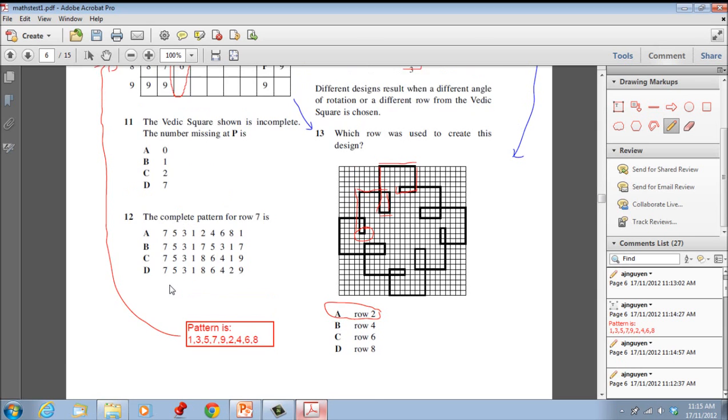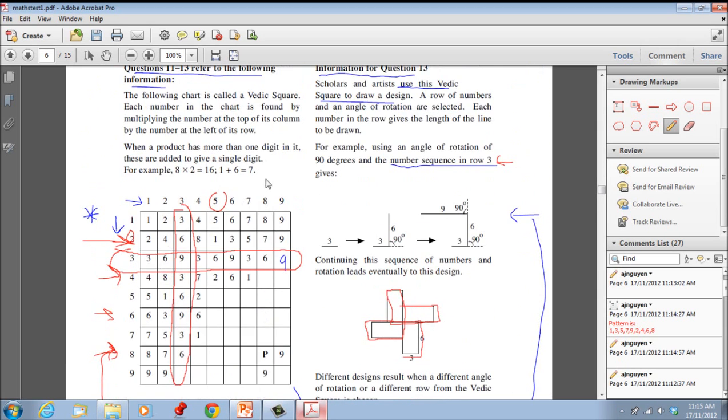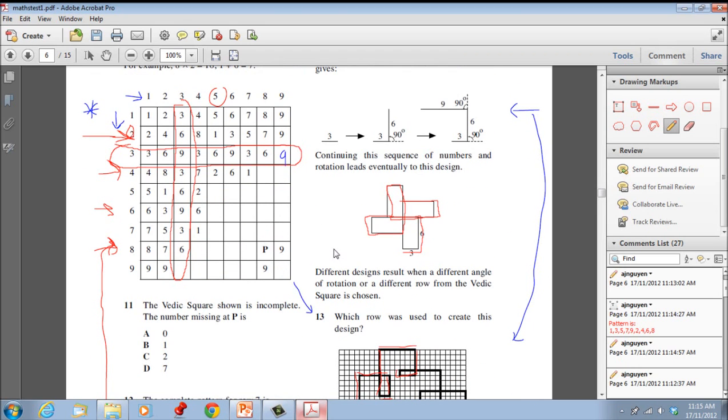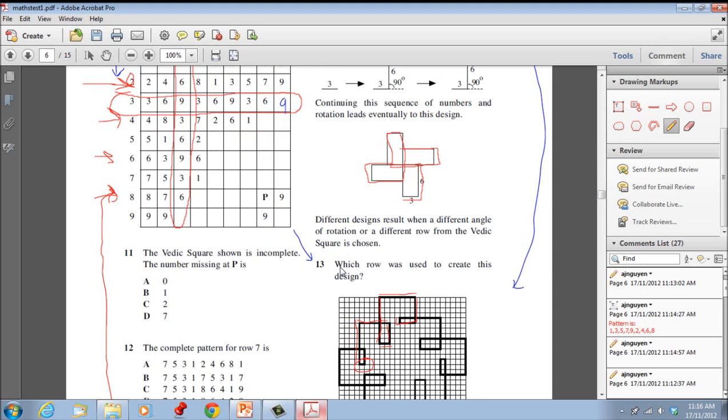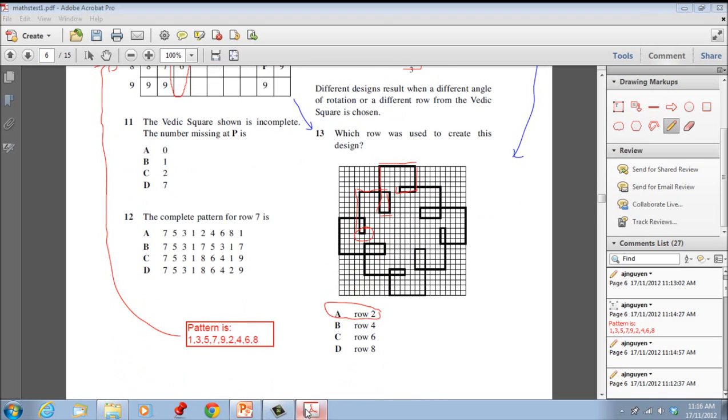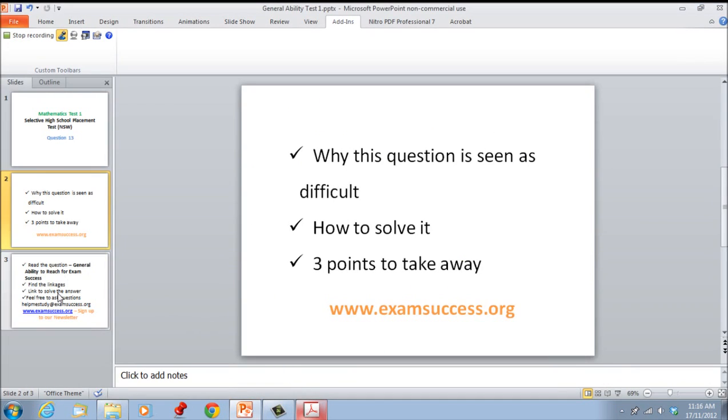I think a lot of people would find this difficult if they hadn't read this key section here, which is the number sequence in row 3. To me, that would be the key thing, the missing link to finding the solution. I personally find the Vedic square quite interesting because just from a number sequence, they're able to create a multitude of patterns using different angles. These patterns are quite extraordinary, to be honest. So given this, we'll go through three points I think we should take away.